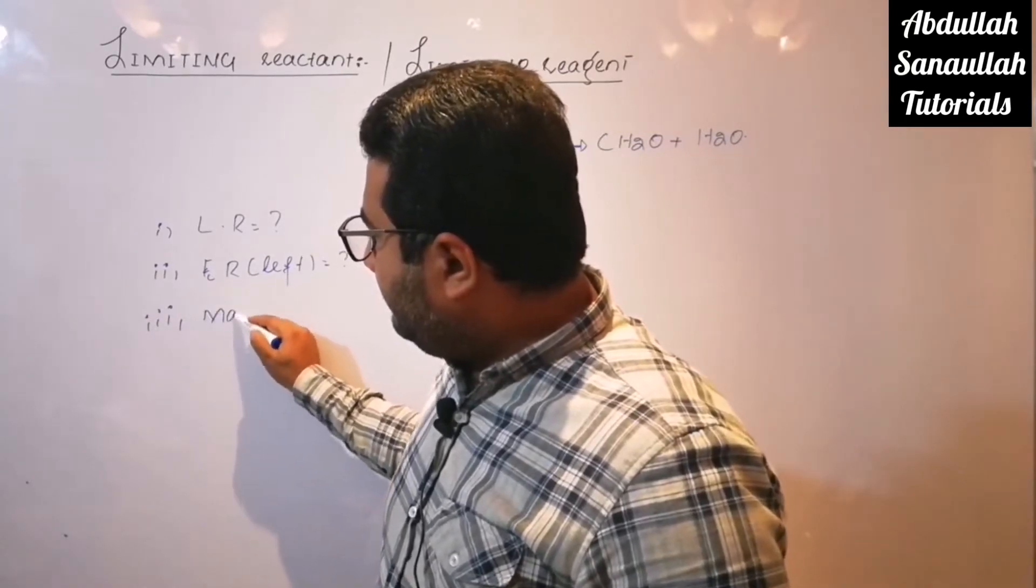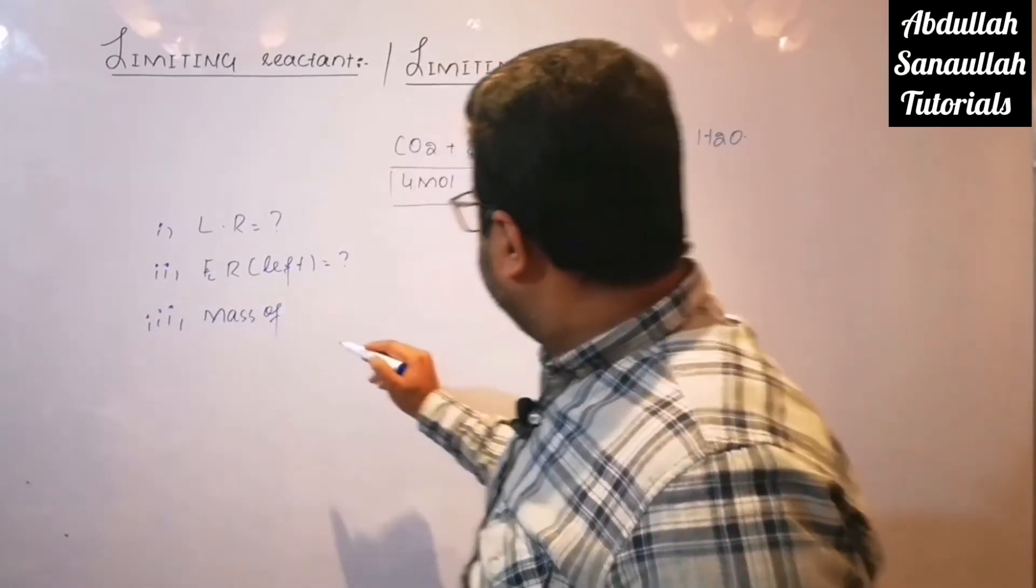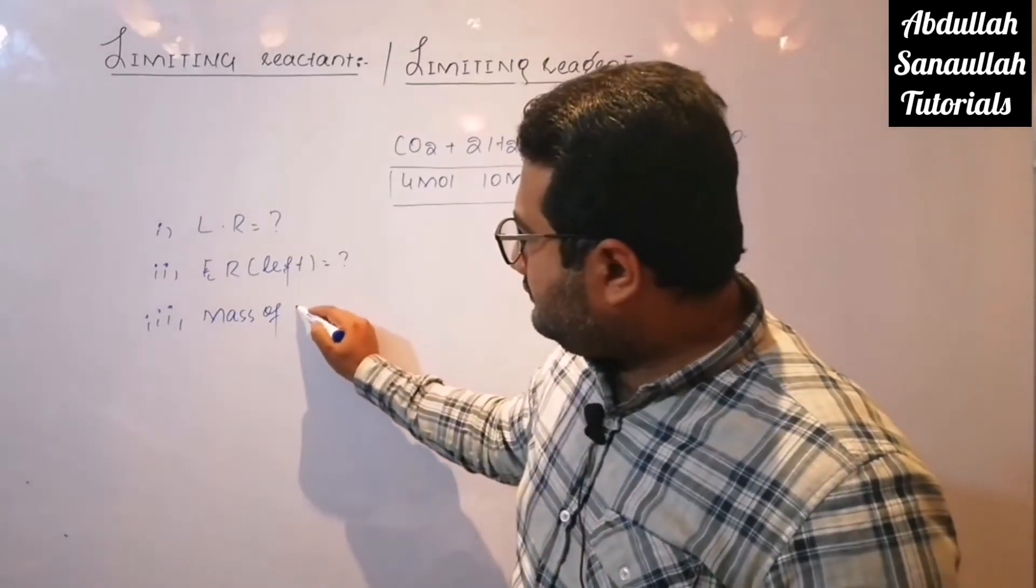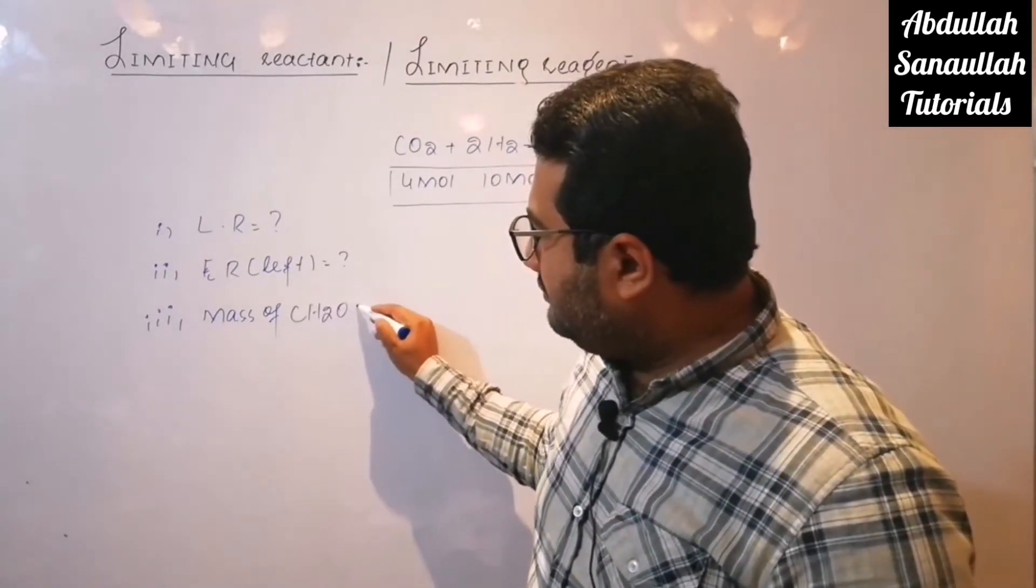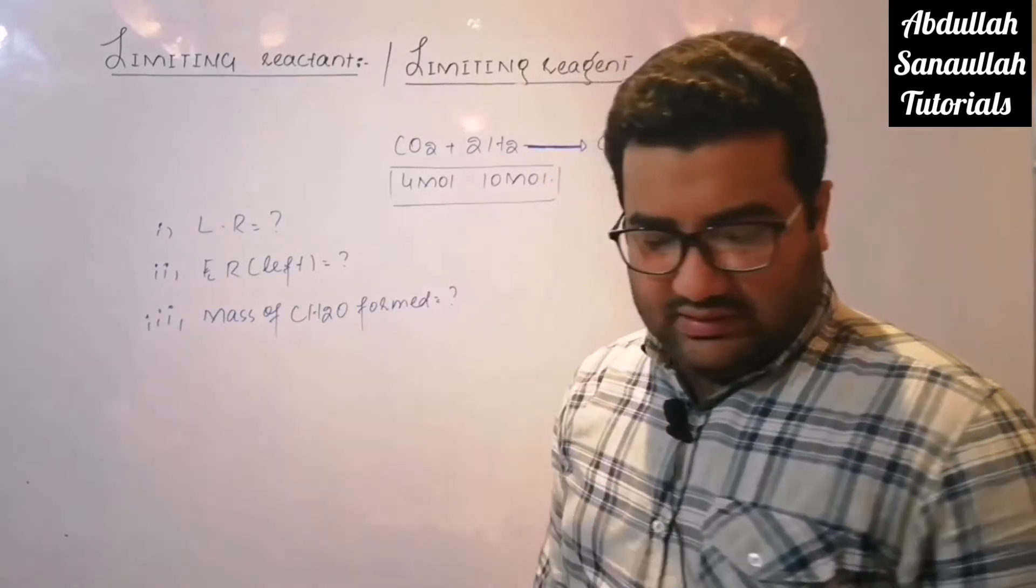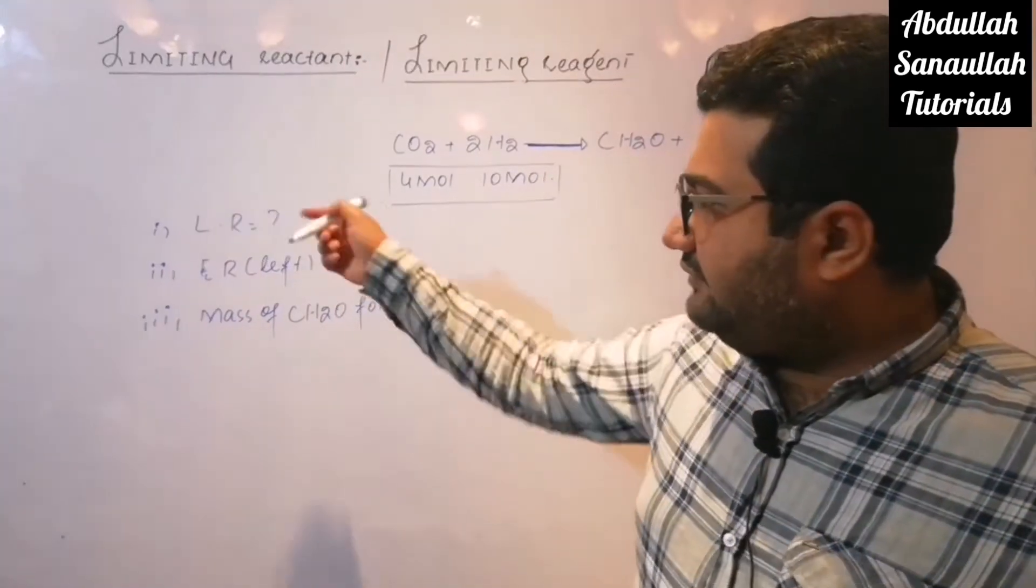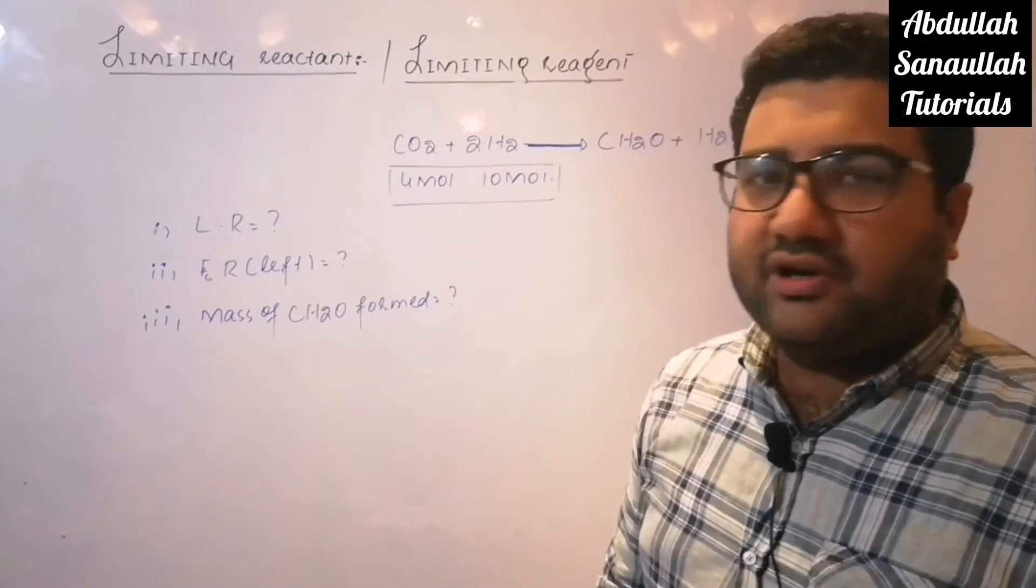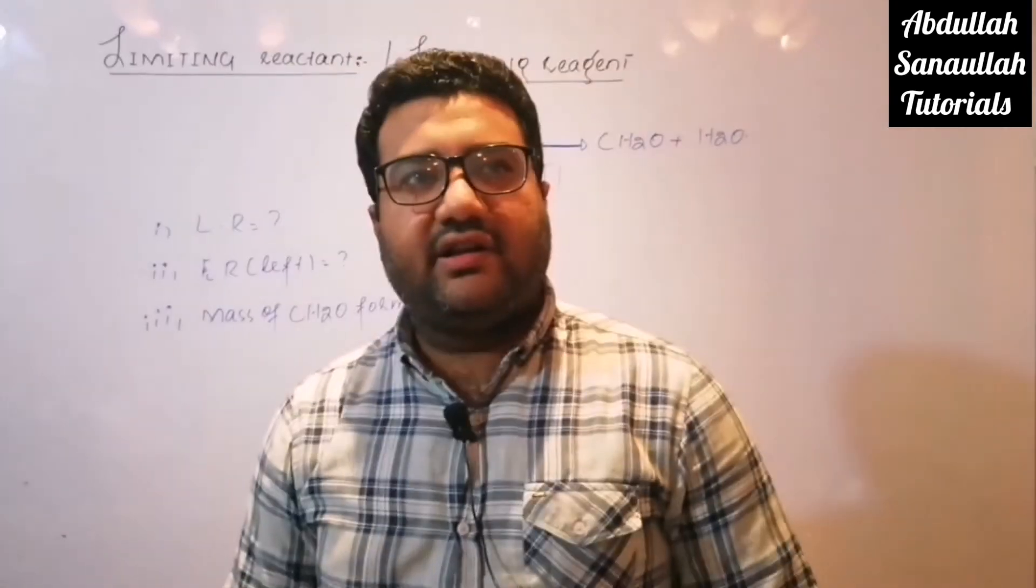Mass of CH2O formed. So let us solve first of all the first portion that we are required to identify which of the following is the limiting reactant.